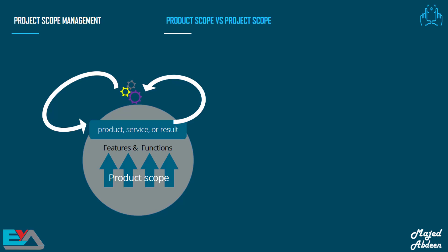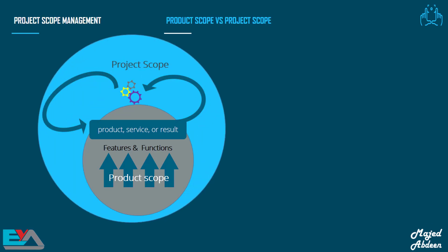What about the Project Scope? Remember the definition of a project — a project is a temporary endeavor undertaken to create a unique product, service, or result. So that means the Project Scope is the work we have to do in order to achieve the desired result. For instance, if you've been given a project to create a software application, then the Project Scope will tell you how you're going to build it, giving you all the information you need to actually make this application. The Product is part of the Project Scope, so sometimes the Project Scope is viewed as including the Product Scope.